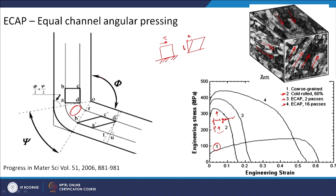Instead of cold rolling, you can do this ECAP process. Two passes are introduced and 16 passes are introduced. With two passes, the strength has increased, and with 16 passes the strength has increased further, and there is also a good amount of ductility in the material. The idea here is that from coarse grain, if you keep putting strain in the material, there is an increase in strength, and sometimes there is also an increase in ductility along with the strength.